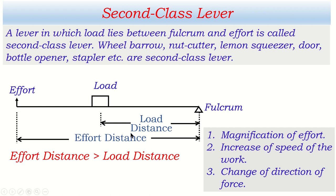However, a second class lever cannot increase the speed of work, because to do that the load distance should be longer than effort distance — but here it is not. Also, the direction of force is not changed: without the lever, we would apply force vertically upward to raise the load, and with this lever we are again applying force vertically upward. So the direction of force is not changed.